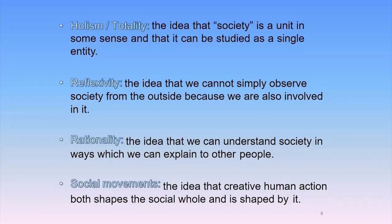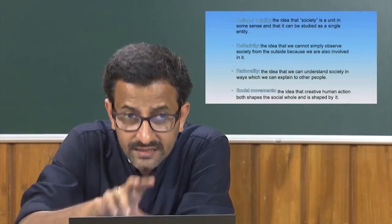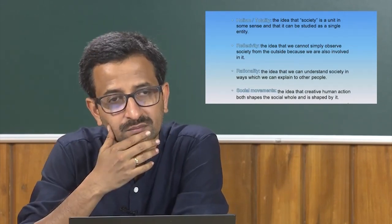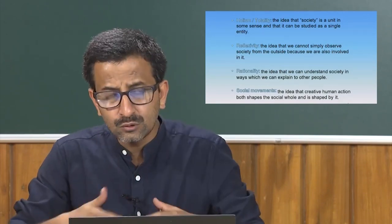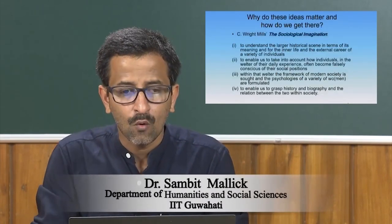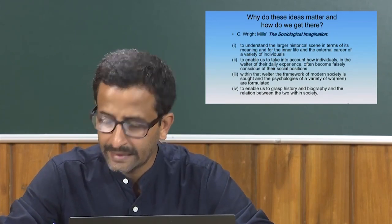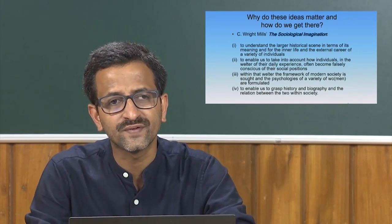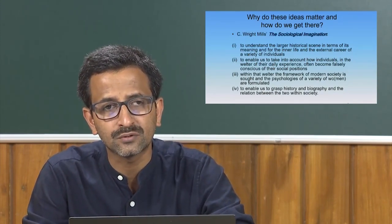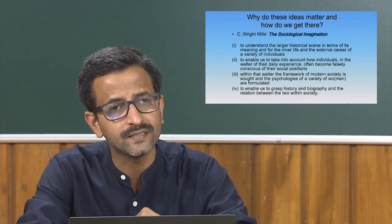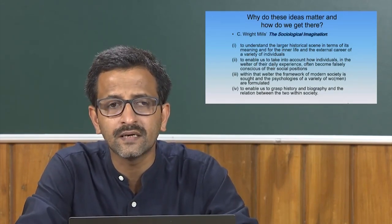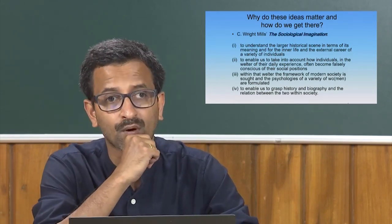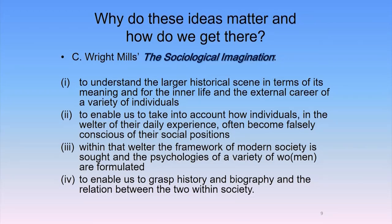Before we move on to certain methodologies to understand these four pillars — holism or totality, reflexivity, rationality, and social movements — what I want to do in this lecture is to explain why these ideas matter and how do we get there. Why these central philosophical and political foundations of the critical modernist paradigm in sociology matter — namely holism or totality, reflexivity, rationality, and social movements — and how do we get there. This involves a methodology.